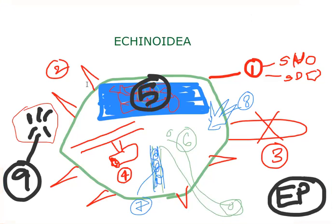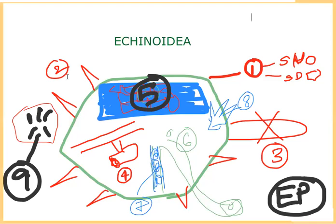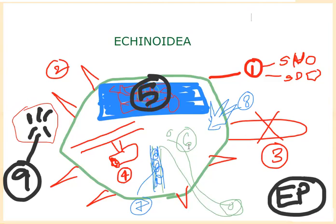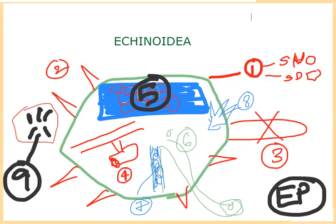By looking at the diagram, what comes to mind: number two — movable spines. Number three — arms are absent. Number four — suckers, tube feet bear suckers. Number five — test or corona or case. Number six — madreporite and anus, aboral in position. Number seven — ambulacral grooves are closed.